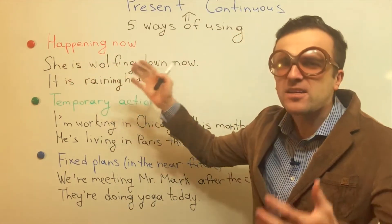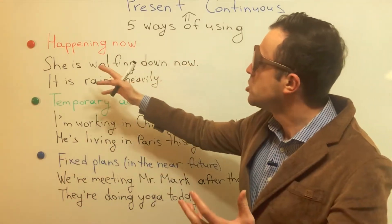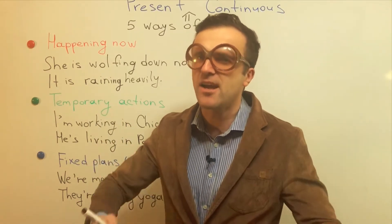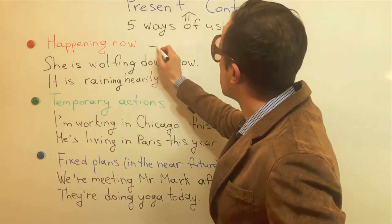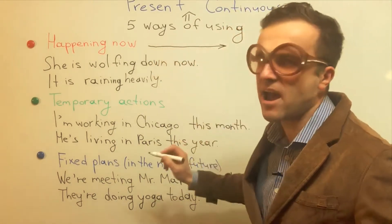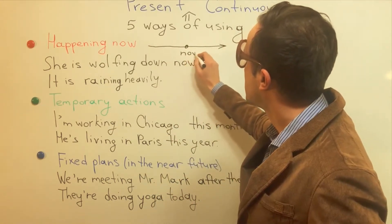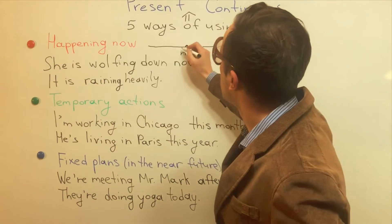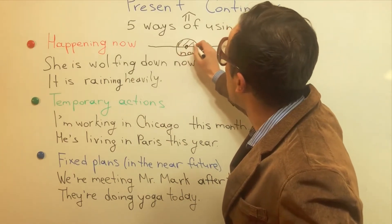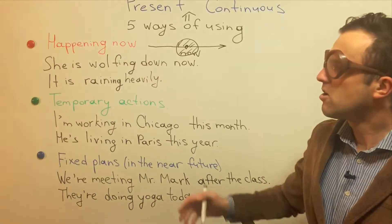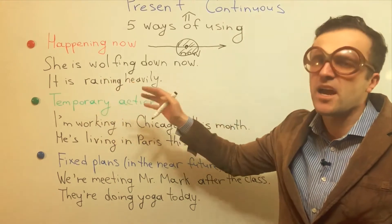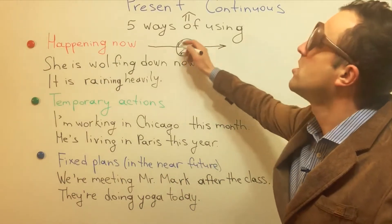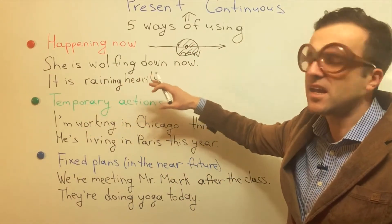The first way is happening now. For example: 'She's whooping down now,' meaning she's eating very quickly right now. Let's draw the graph. Here is now, and the action is taking place right now. Another example: 'It is raining heavily' — right now, the action is taking place.